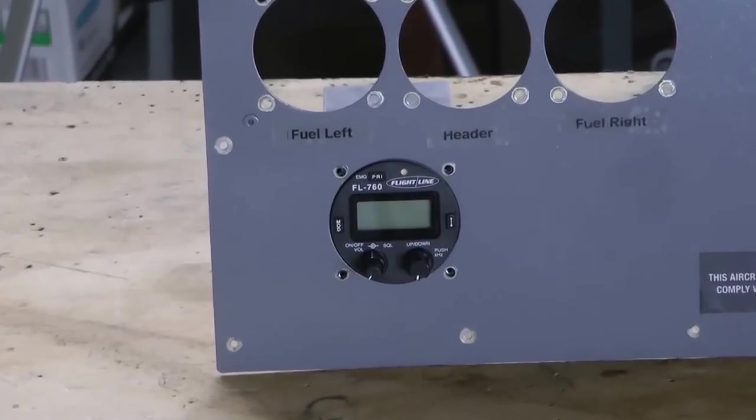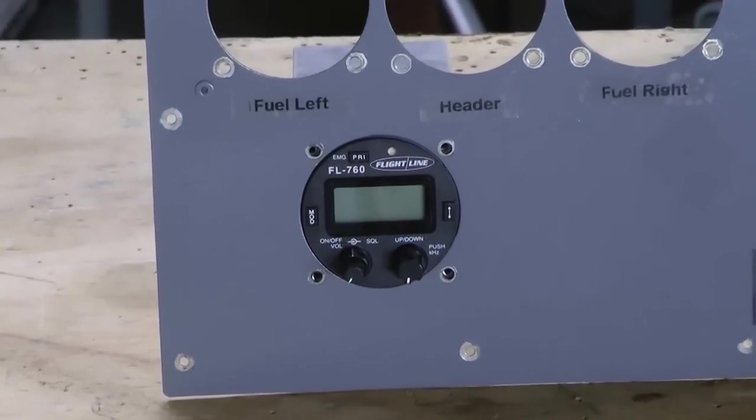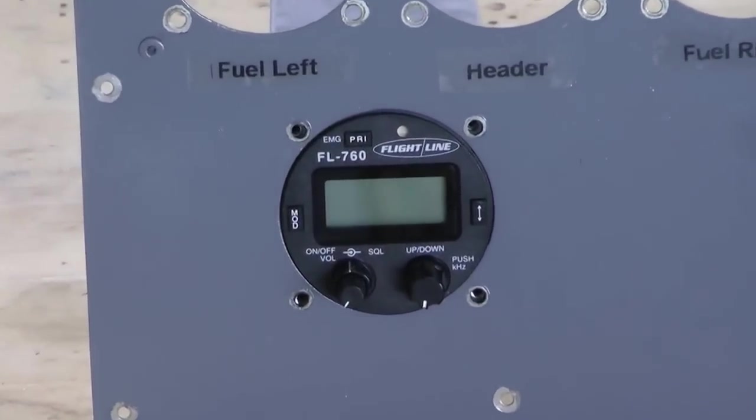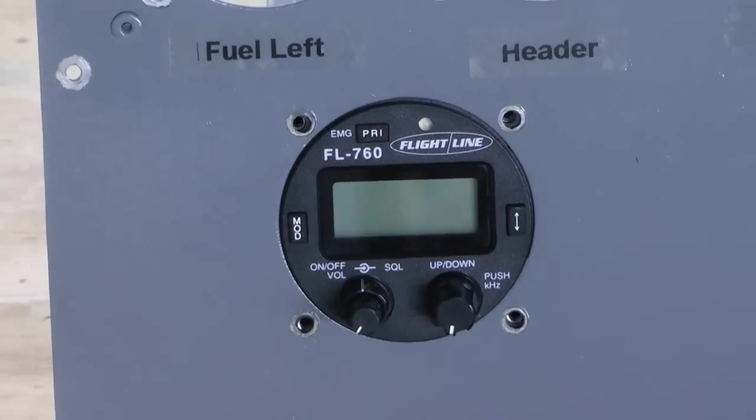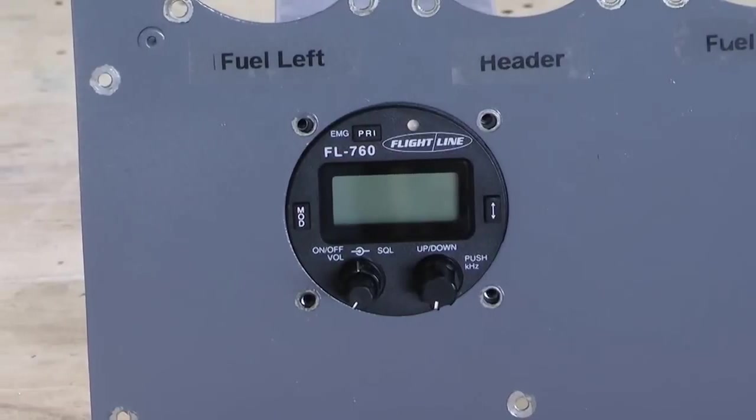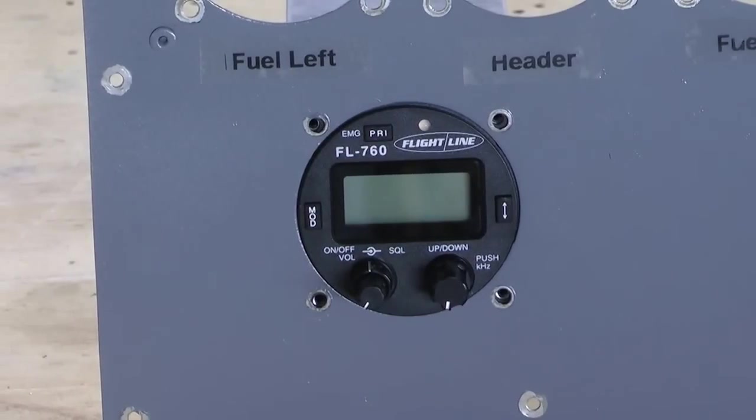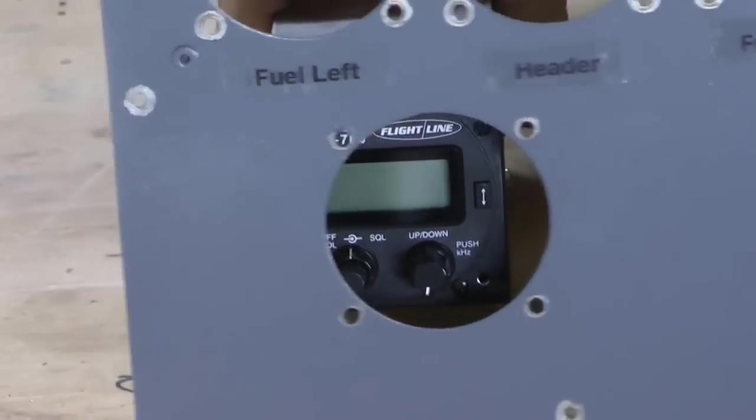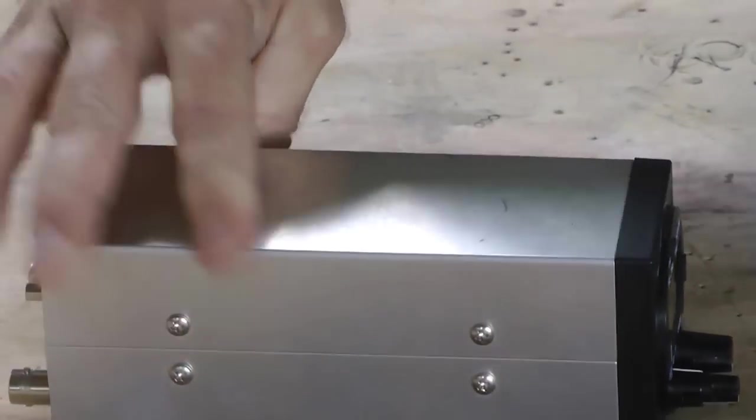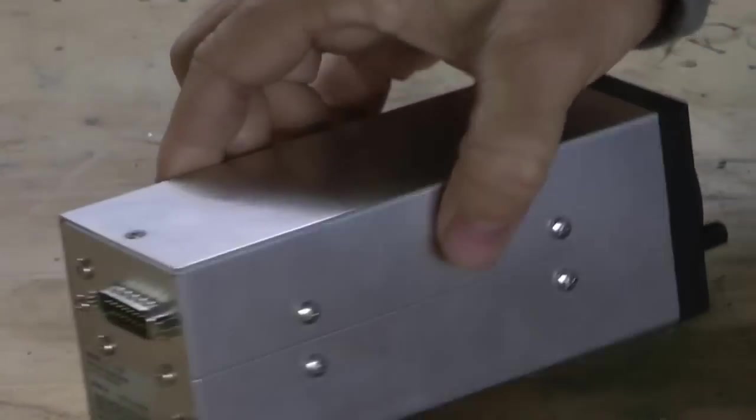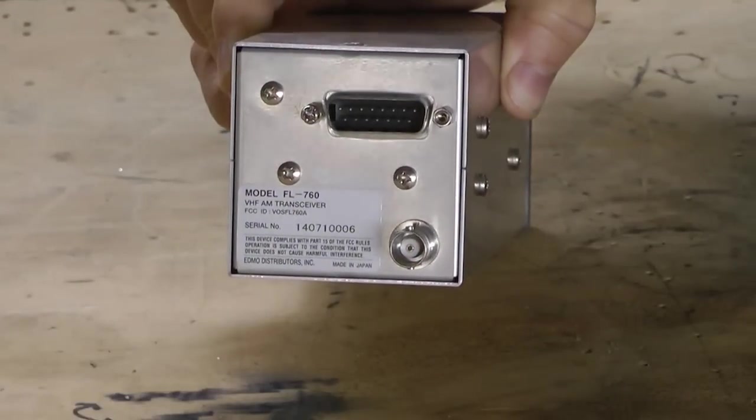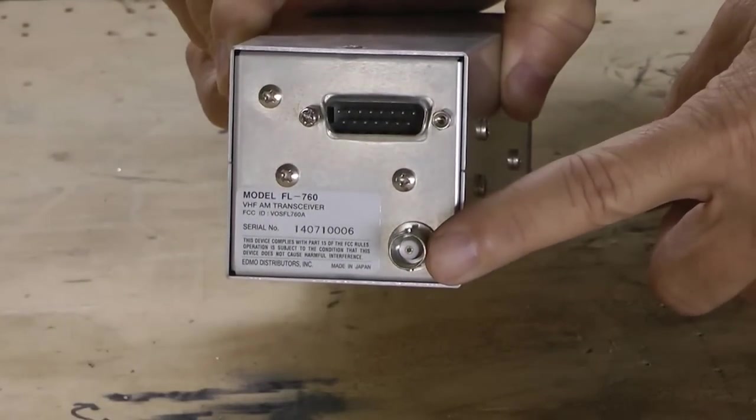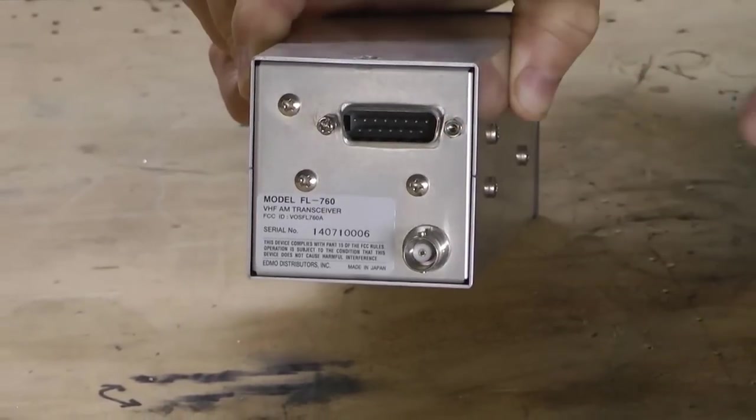One suggestion I would like to make is to choose a communication radio that is round and will fit in a standard two and a quarter inch panel hole. If you've ever wondered what the radio looks like behind the panel, let's take a look. And there it is. What's really nice is there are only two connections on the back, one for the antenna and one for everything else.